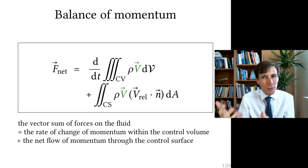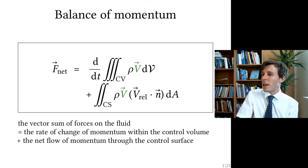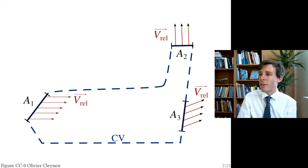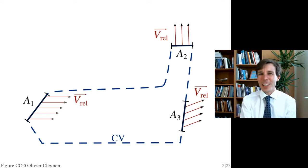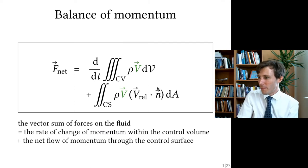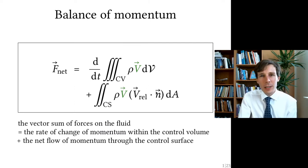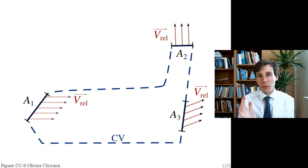Instead of trying to prove this equation, let me show what it's good for and what it's not good for. Let's take a case where we have only one inlet and two outlets. What is V_rel and V dot N in this equation? Those terms designate the inlet or outlet velocity — the incoming or outgoing velocity through the control surface.